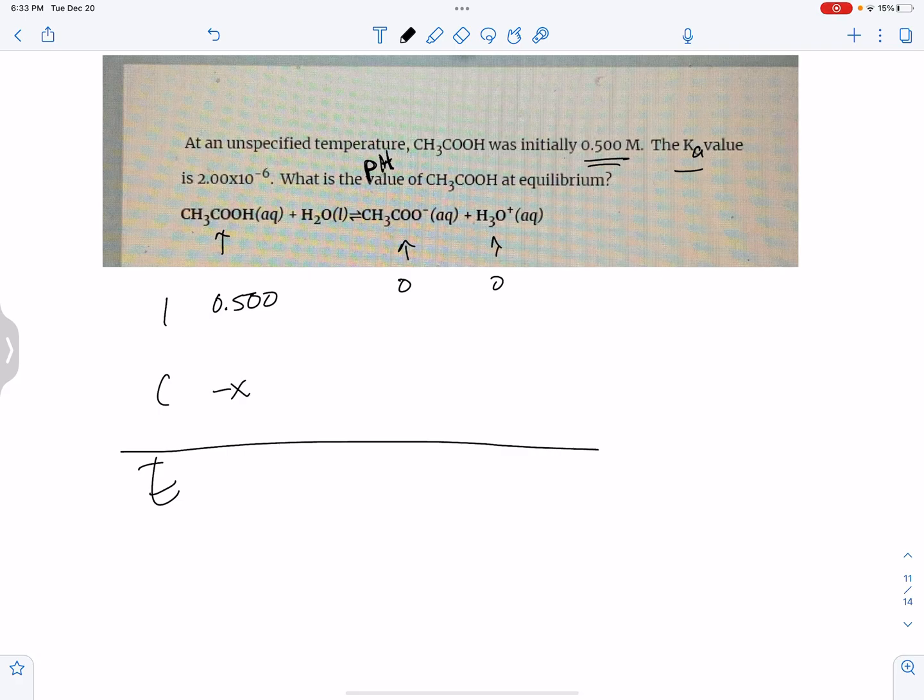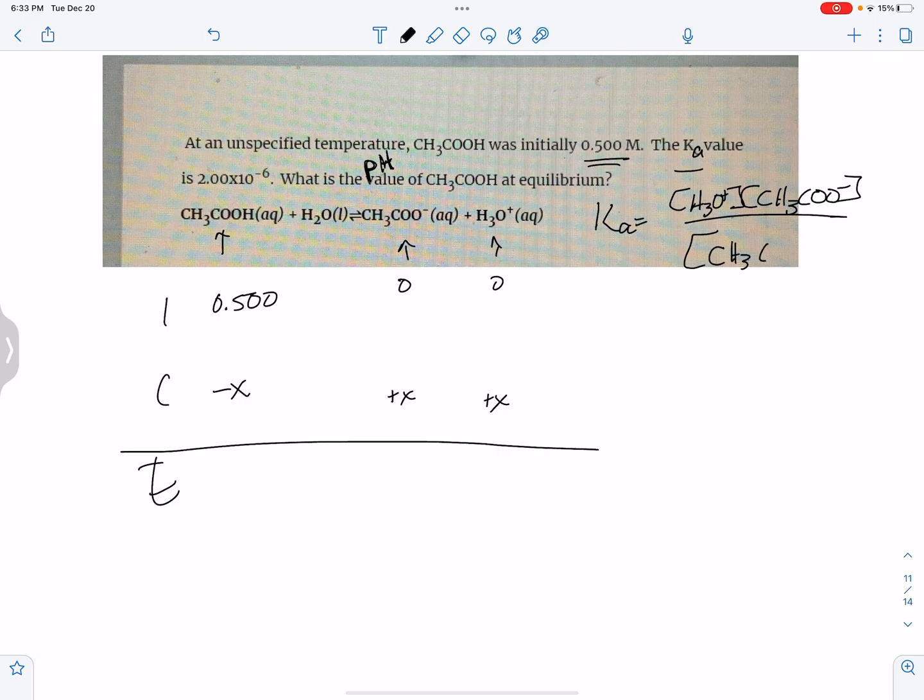I'm losing the reactant and gaining each product, so plus X plus X. Before I go any further, I'm supposed to have filled out my Ka. So Ka is H3O+ times CH3COO- over CH3COOH. And note that I do have this Ka value right there.